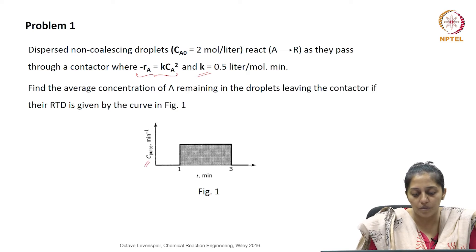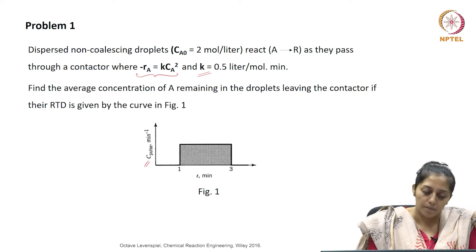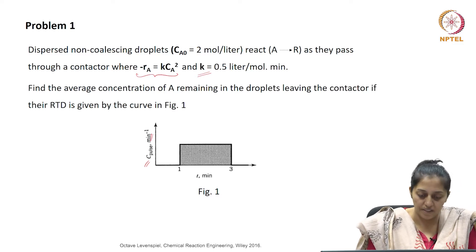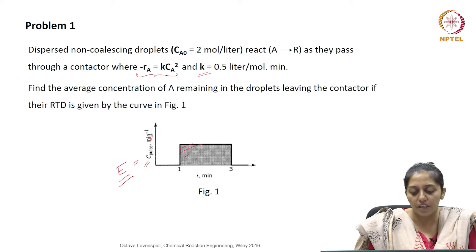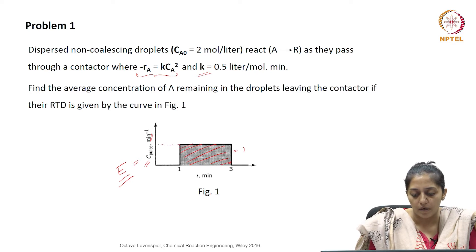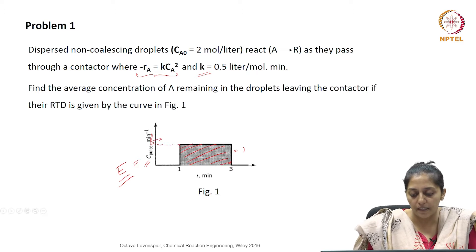We know they have used a C-pulse tracer experiment. But if you notice, the unit of this is minute inverse. This indicates that this C-pulse is equal to the E curve. So the area in the shaded region is equal to 1. Therefore, your E value at this point from between 1 to 3 is 0.5.